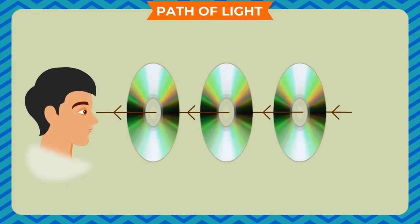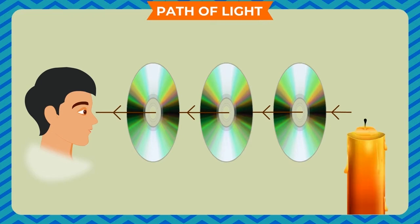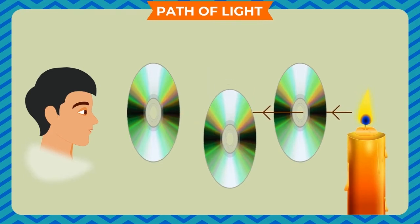Take 3 CDs. Put them at a distance from each other in such a way that the holes of all the CDs lie in a straight line. Now take a candle and put it behind the third CD. Make sure that the height of the candle is the same as the height of the CD hole from the base. Now burn the candle and see its flame through all the holes from the opposite end. You can easily see the flame. Now displace one CD from its position such that the holes of all the CDs do not lie in a straight line. Again, see the flame through the holes altogether.